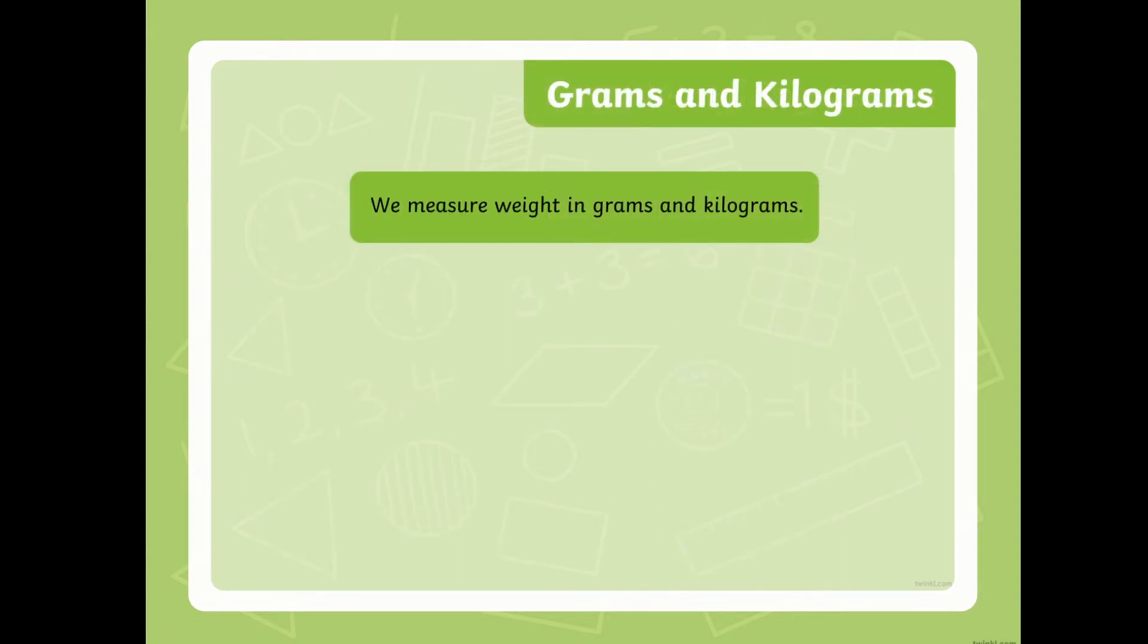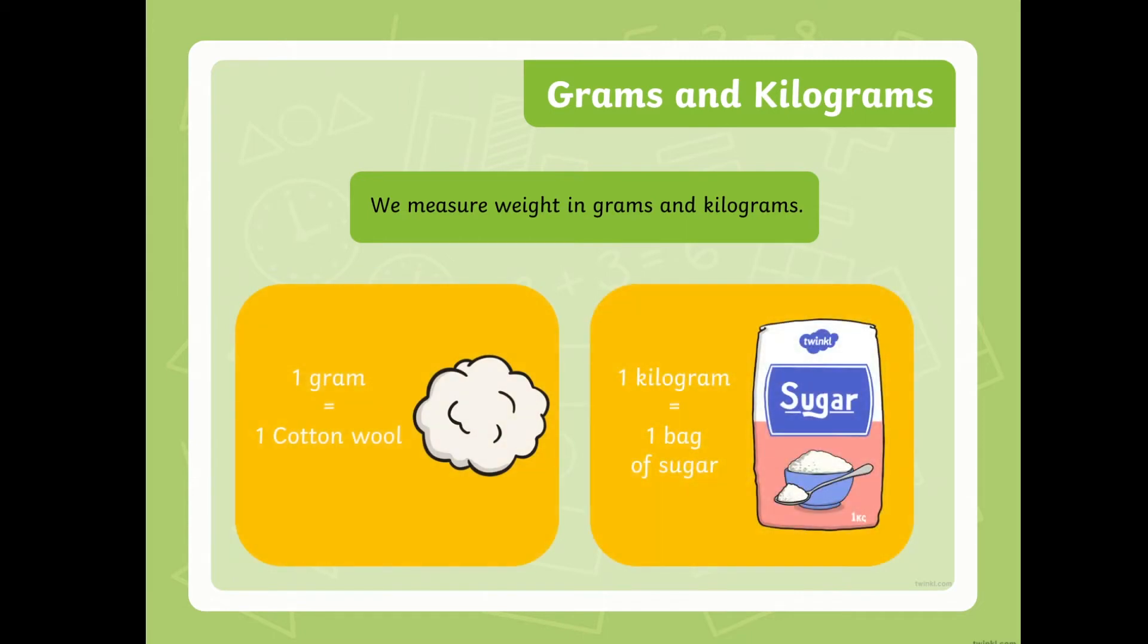There are two units that we use to say how heavy things are. We have grams and kilograms. We measure weight in grams and kilograms. Now, we use grams and kilograms to measure weight. For example, for light objects, we use grams. We can say this cotton wool is one gram. And this sugar is one kilogram.